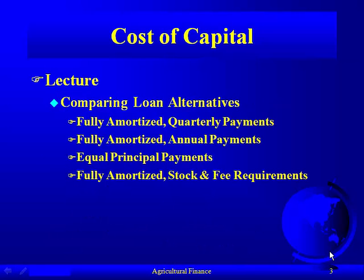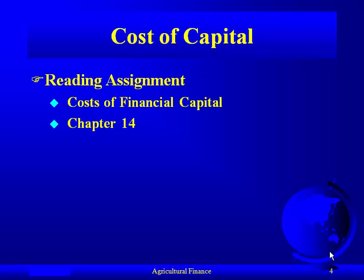Today we're going to use this vocabulary and procedure to compare four different loan alternatives: one with quarterly payments, one with annual payments. We're going to introduce some new concepts, including equal principal payments instead of fully amortized loans, getting a loan from a farm credit system — which requires learning about the purchase of stock in that cooperative — and we're also going to introduce fee requirements. Your reading assignment is chapter 14.